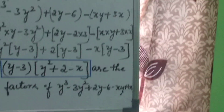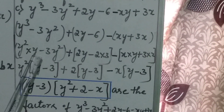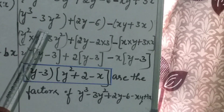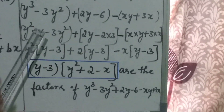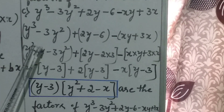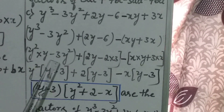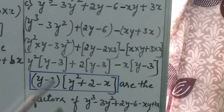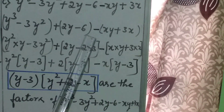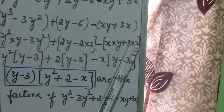Now you expand each group. How to write y cube? Using the law of exponents — a to the power m into a to the power n equals a to the power m plus n — with base y, you write y square into y, since 2 plus 1 equals 3, giving y cube. So the expansion is: y square into y minus 3 into y square, plus 2y minus 6 where 6 equals 2 into 3, minus x into y plus 3 into x.